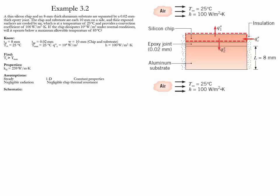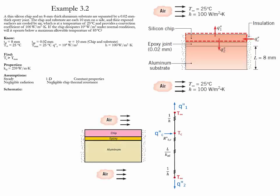This is a conduction case which is steady, one-dimensional, with constant properties. Some assumptions are that it has negligible radiation and that the resistance within the chip is negligible. This is the resistance representation of the problem. The upper part of the chip has convection, as does the bottom part of the aluminum. Then we have conduction in the aluminum component and the epoxy resistance. Remember that we are neglecting the resistance inside the chip.